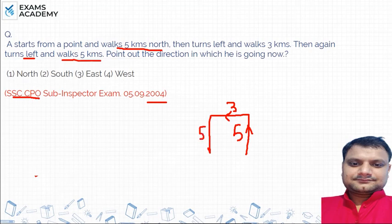If we are going to the left, we will take 5 kilometers. Then it says point out the direction in which he is going now. Then it turns left and walks 5 kilometers. Now it goes here. Then it goes in which direction? This is the point. Point out the direction in which he is going now. Which direction does it go in? Then it goes in the south direction.